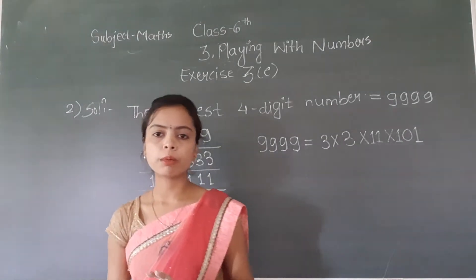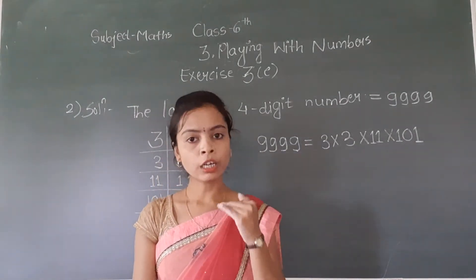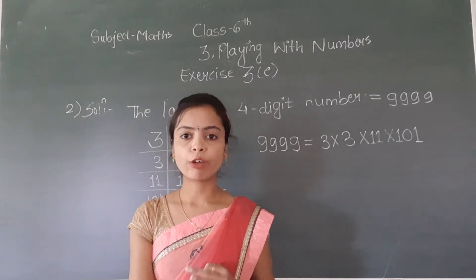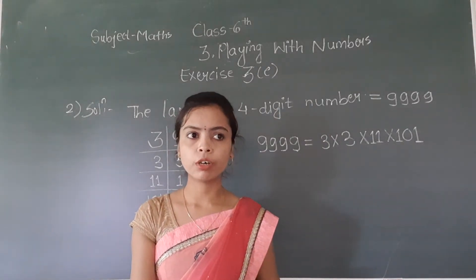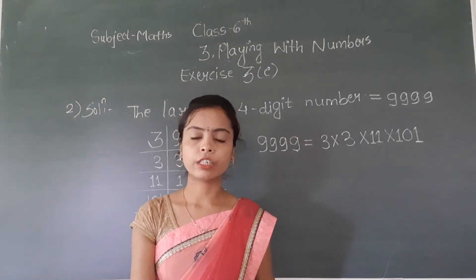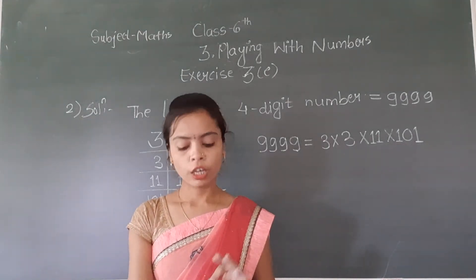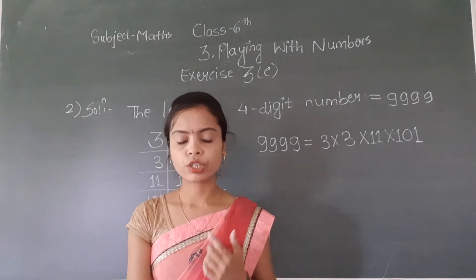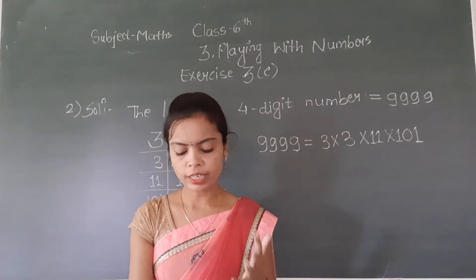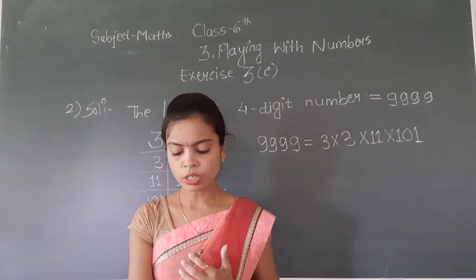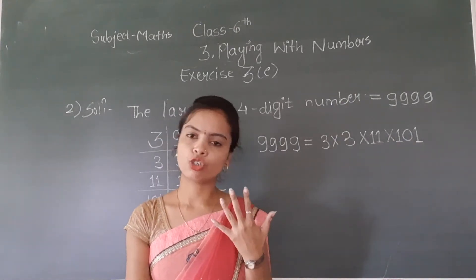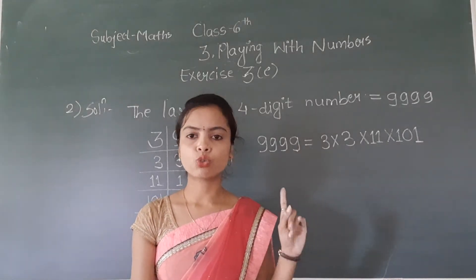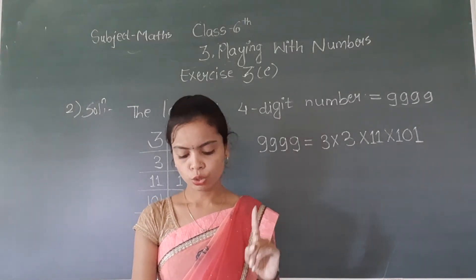Now 101 is a prime number, so it is not divisible by any other numbers. We divide it by 101 itself, so the right column becomes 1 and we stop. The prime factorization of the largest four-digit number is: 9999 = 3² × 11 × 101. So you have to write the smallest and largest four-digit numbers and perform the prime factorization of each. This is your solution for question number 2.